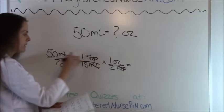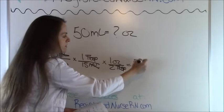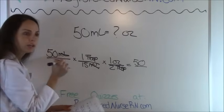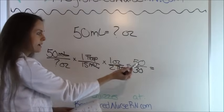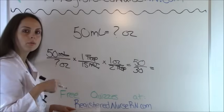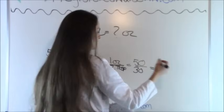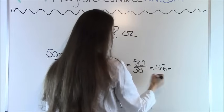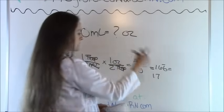We multiply everything on top: 50 times 1 times 1 is 50. On the bottom, 15 times 2 is 30. We divide 50 by 30, which gives 1.6666. We round that to 1.7. So 50 milliliters equals 1.7 ounces.